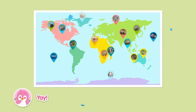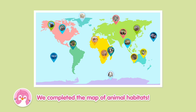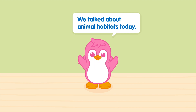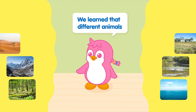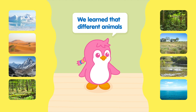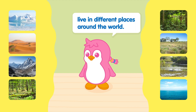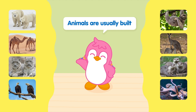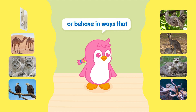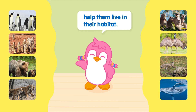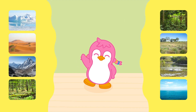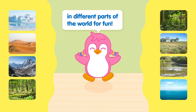Yay! We completed the map of animal habitats. We talked about animal habitats today. We learned that different animals live in different places around the world. Animals are usually built or behave in ways that help them live in their habitat. You can try looking for animals in different parts of the world for fun.